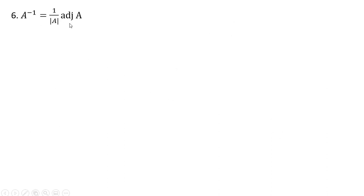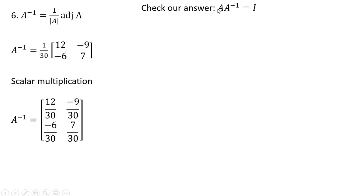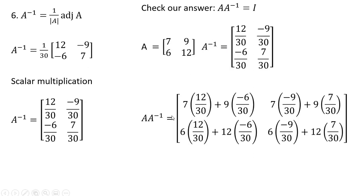Now we can put everything together: 1 over the determinant multiplied by the adjoint matrix. We do scalar multiplication — 12 times 1/30, minus 9 times 1/30, and so on. We can check our answer: if we take matrix A and multiply it by its inverse, we should get the identity matrix. Performing the multiplication, we do indeed get the identity matrix.